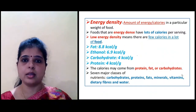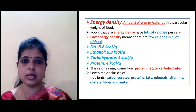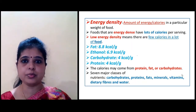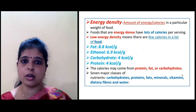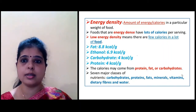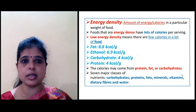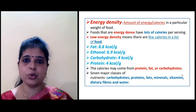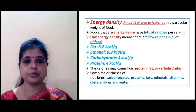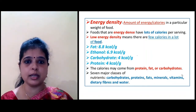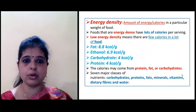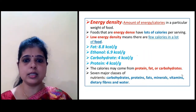What is energy density? Energy density is the amount of energy or calories present in a particular weight of food. In fat, there is 8.8 kilocalories per gram of energy density. In ethanol, 6.9 kilocalories per gram. In carbohydrate and protein, 4 kilocalories per gram of energy density is present. These calories come from protein, fat, and carbohydrate.